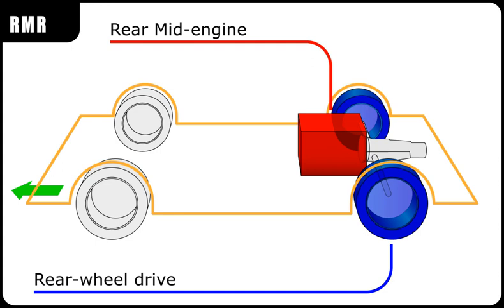In contrast to the rear-engined RR layout, the center of mass of the engine is in front of the rear axle.